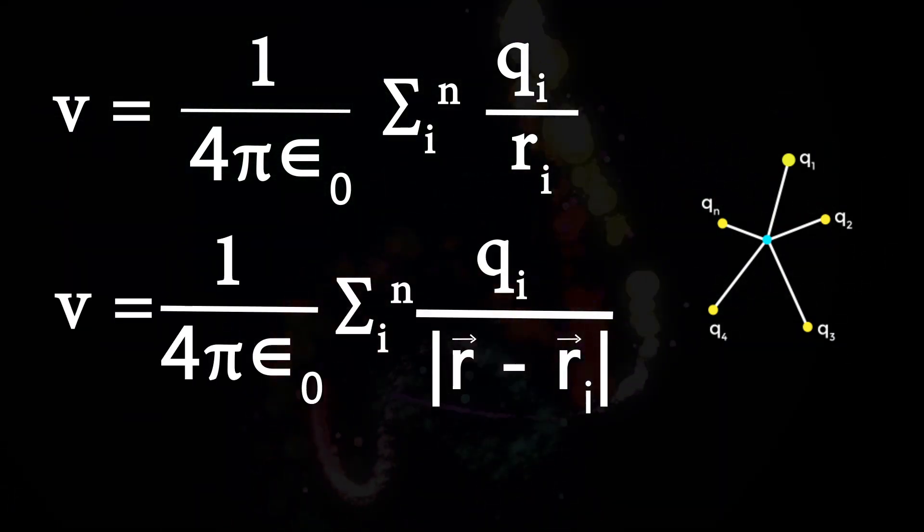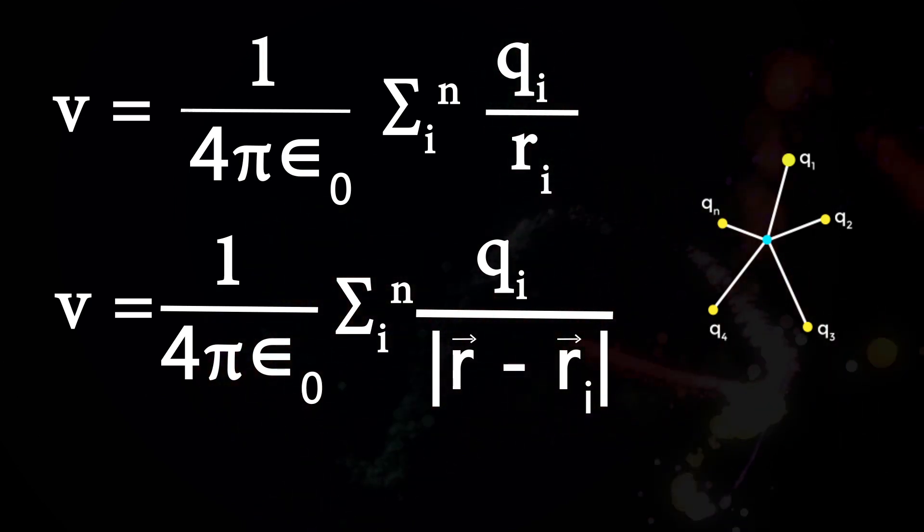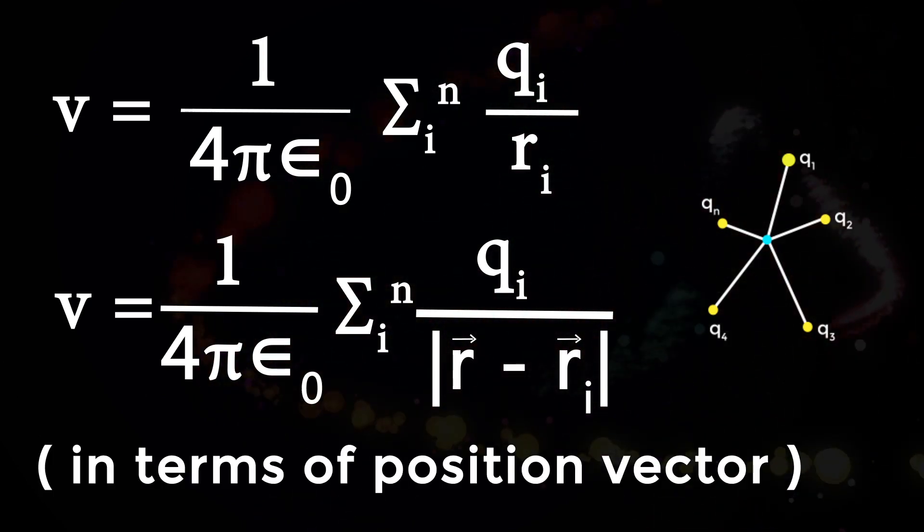V is equal to sigma from i to n qi by modulus of r bar minus ri bar, in terms of position vector.